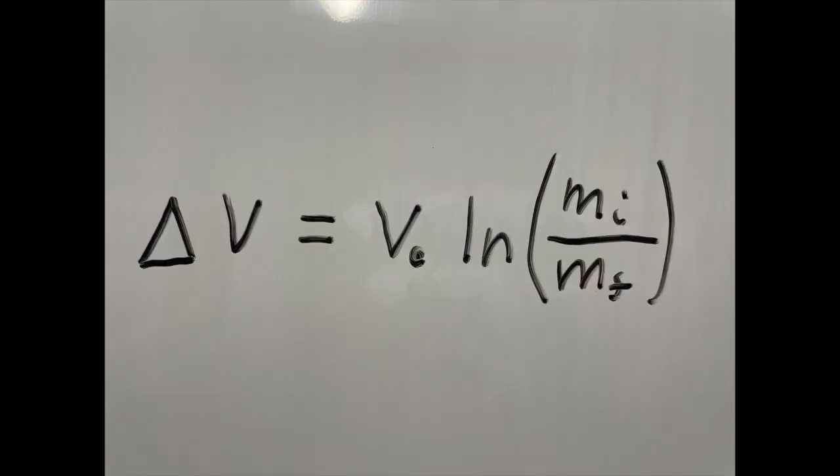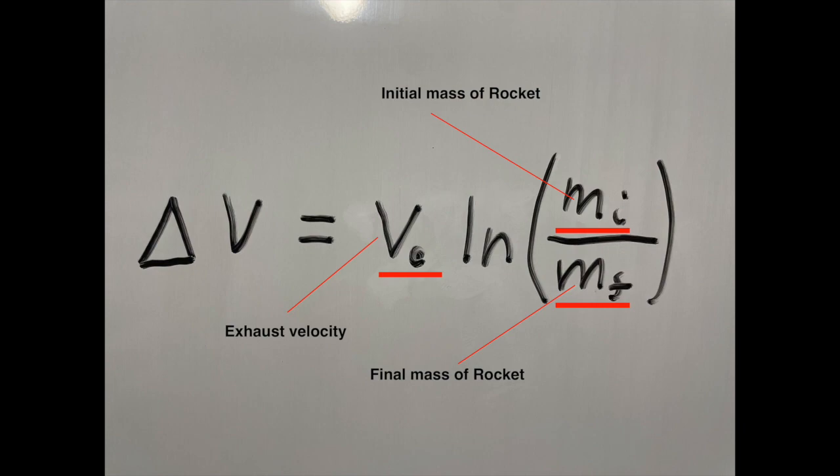Anyways, the basic principle behind the equation is that a rocket is losing mass from the exhaust while gaining velocity, and the change in velocity of the rocket depends on the mass of the fuel, the mass of the rocket, and the velocity that the exhaust is expelled at.